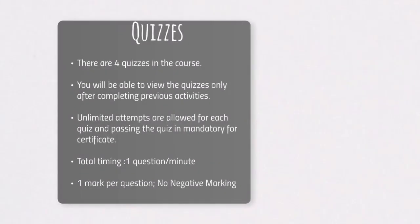There are four quizzes in the course. You will be able to view the quizzes only after completing previous activities. Unlimited attempts are allowed for each quiz, and passing the quiz is mandatory for the certificate — you have to score at least 50 percent. Total timing is based on the formula of one question per minute, one mark per question, and there is no negative marking.